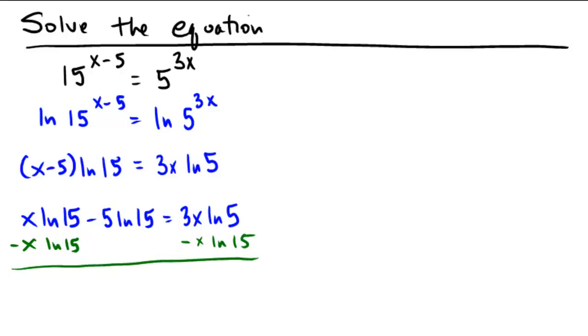So when I do that, what's left over? Well, on the left, we have negative 5 ln 15, and on the right, we have 3x ln 5 minus x ln 15.